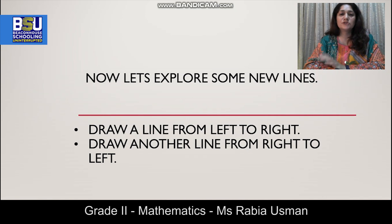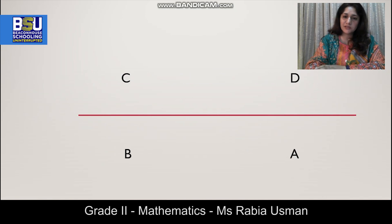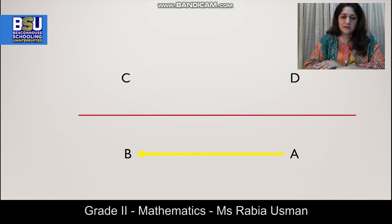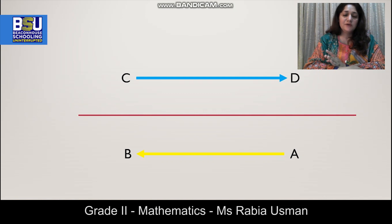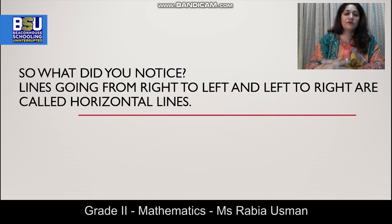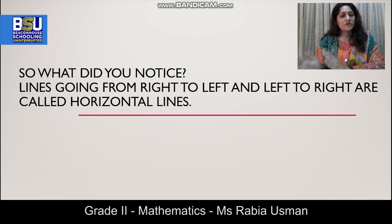Now let's move on to explore some more lines. I'll show you another page on the screen — just observe. You just saw a line going from right to left, which is A and B. Next, you observed a line going from left to right, which is C and D. So you have two lines on your screen: AB going from right to left and CD going from left to right. Such lines going from right to left and left to right are called horizontal lines.